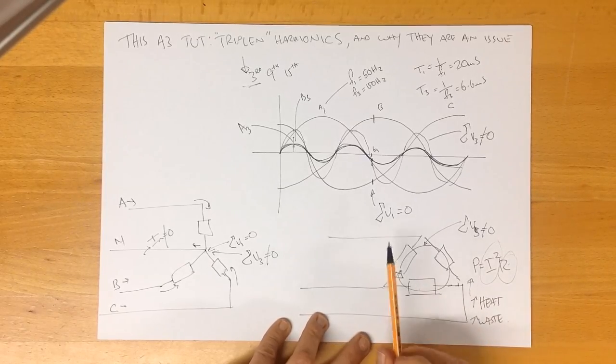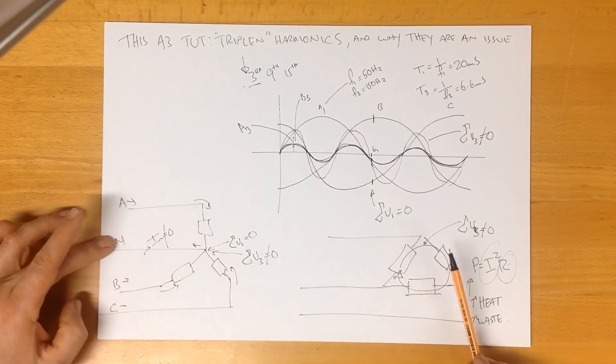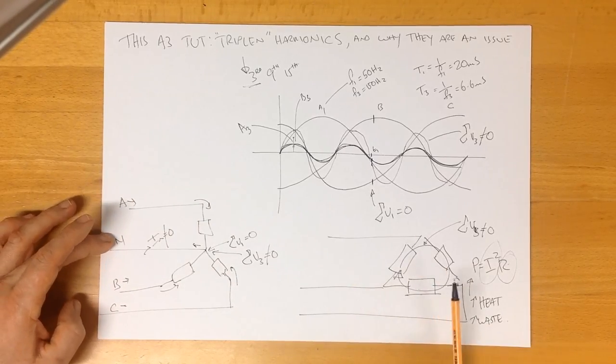This is why triplens are a problem in both star systems and delta systems. In star systems, they cause neutral currents. In delta systems, they circulate.